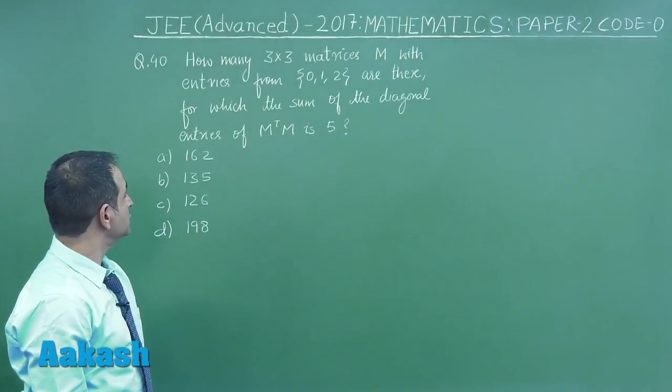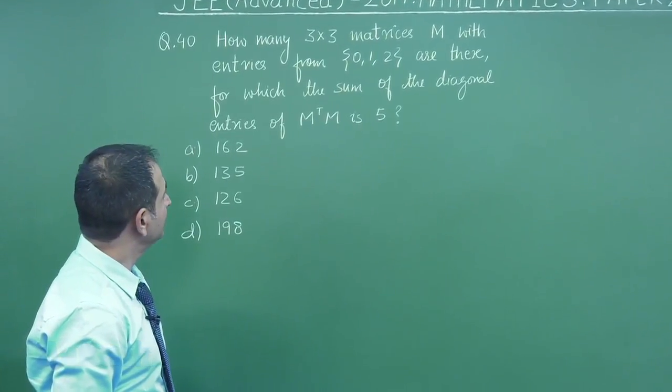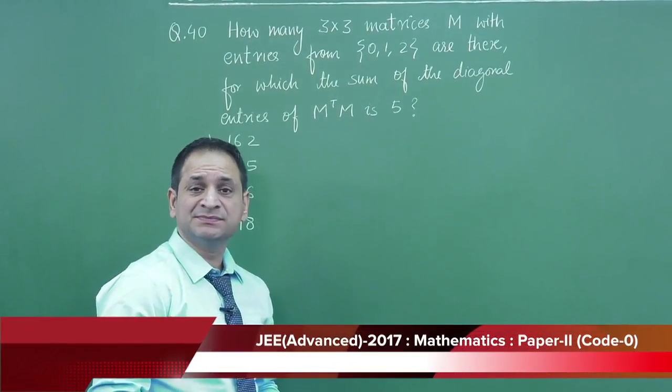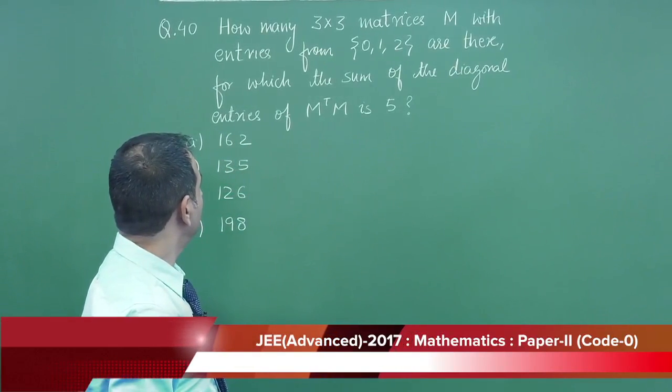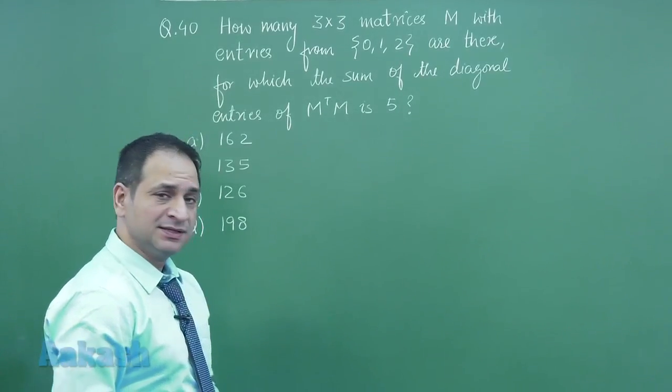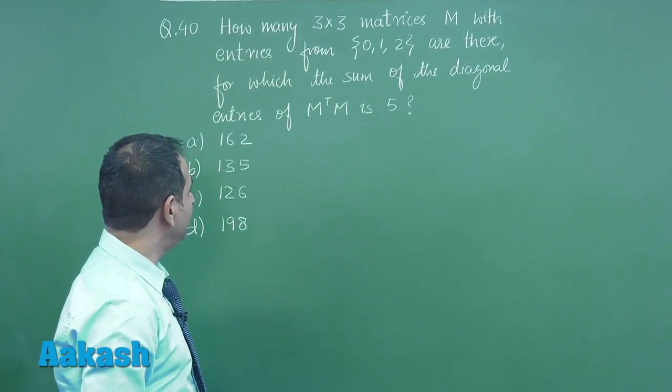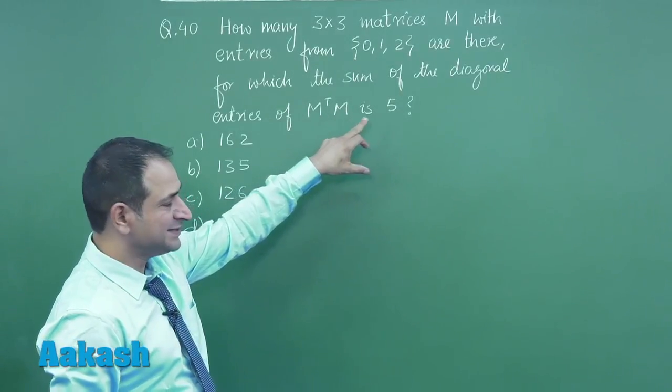Let us move on to the next question, it is again related to matrices. How many 3 by 3, that is third order square matrices M with entries 0, 1, 2 are there for which the sum of the diagonal entries of M transpose into M is 5?